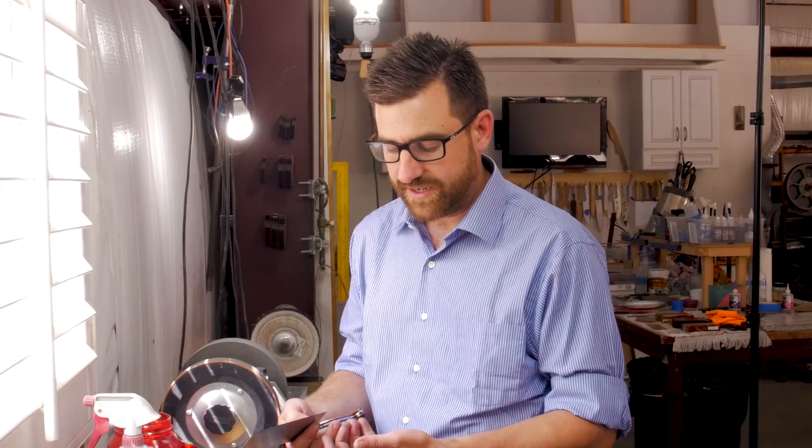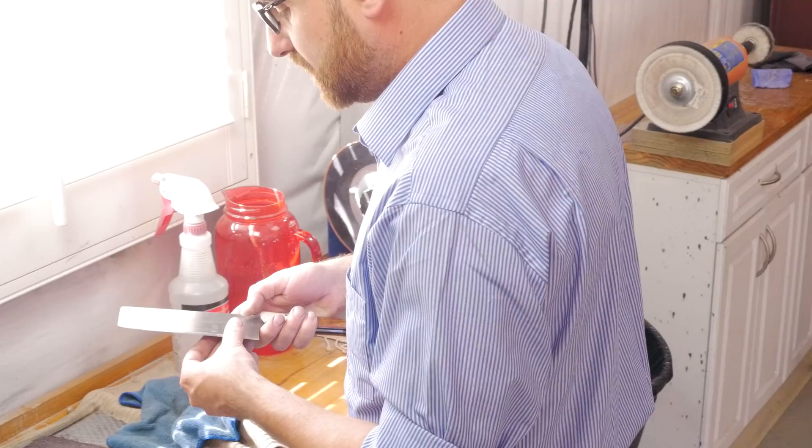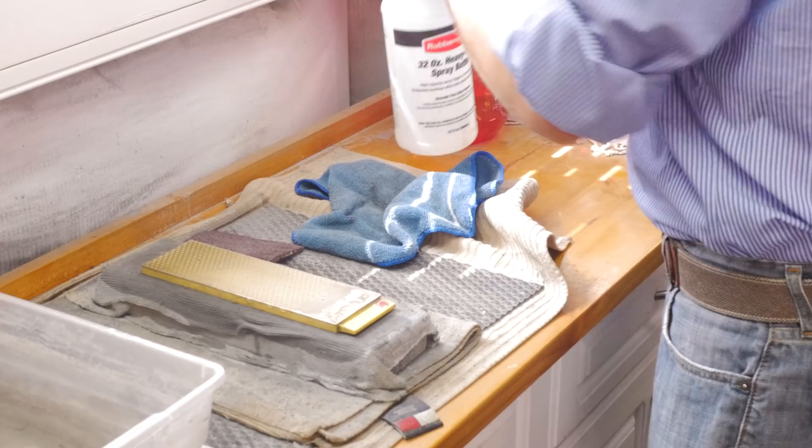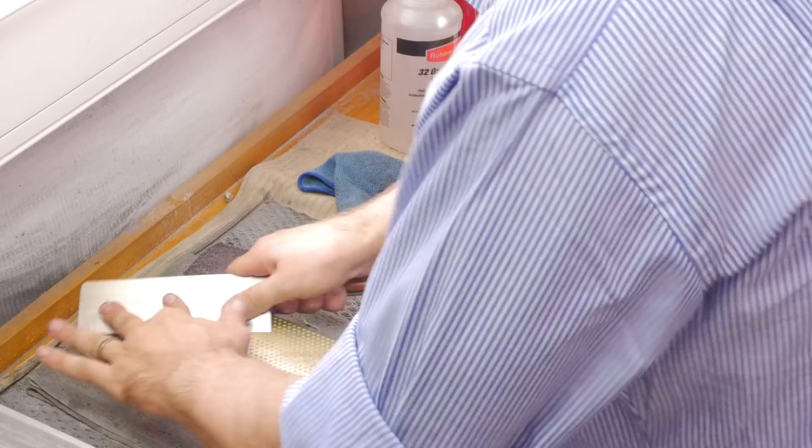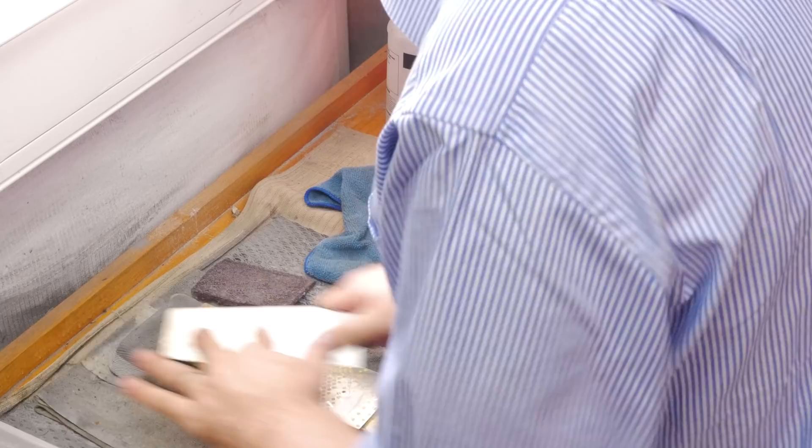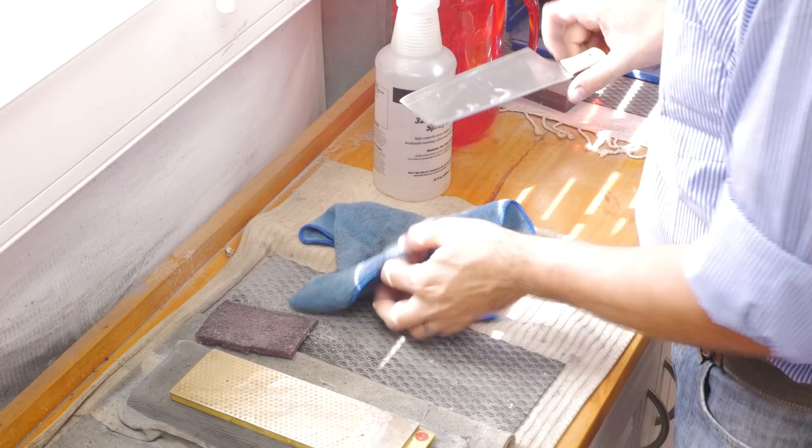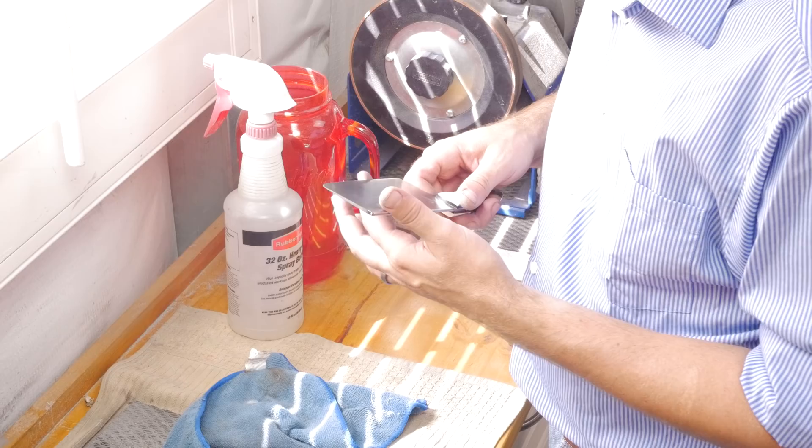So now that I got the burr on the other side, spray the stone off again to get the carbon off and I'll sharpen from this side. Now I should have the burrs flipped over. I check it just to make sure I'm getting flatter. Everything looks good.